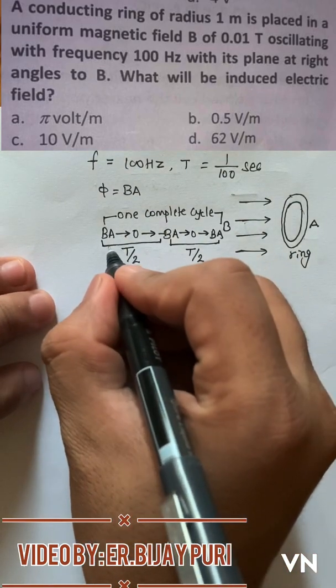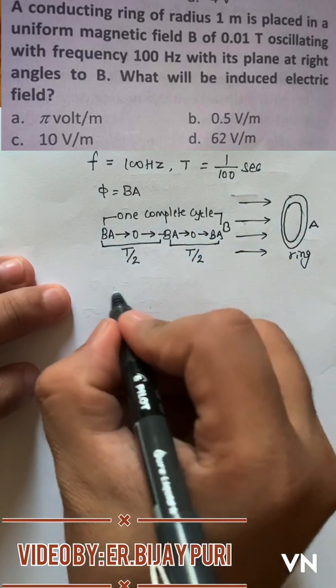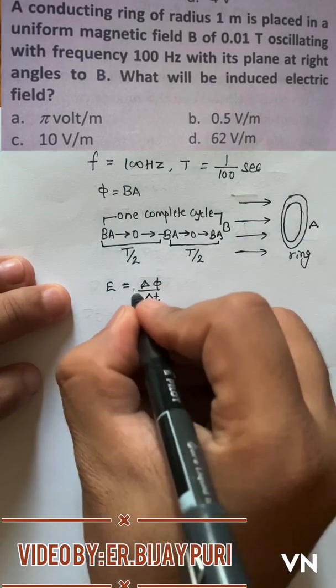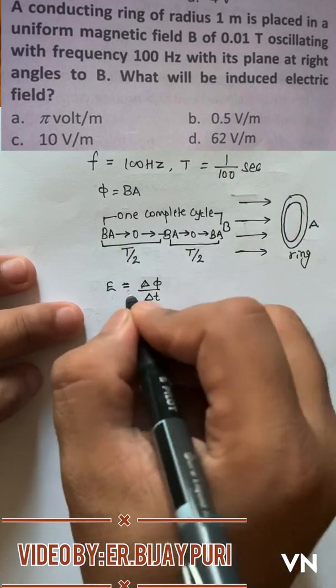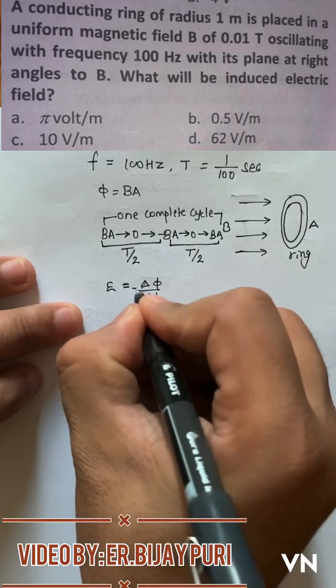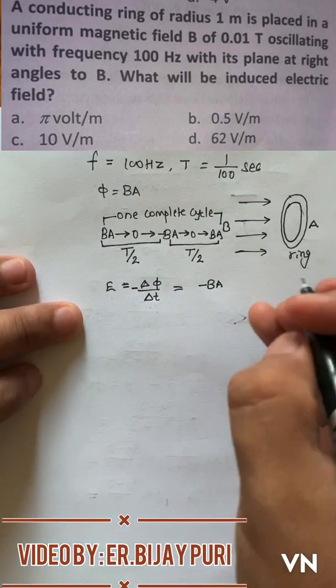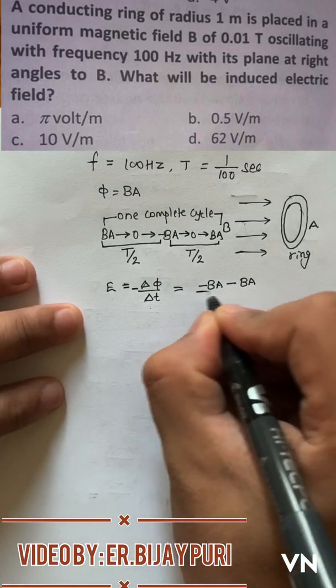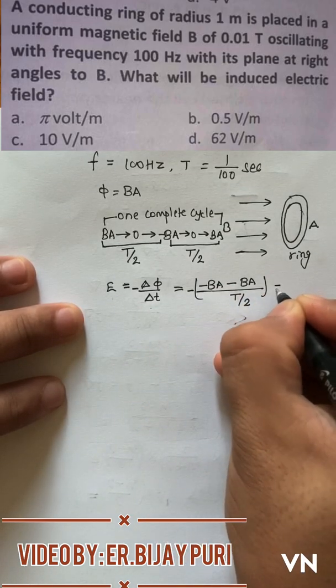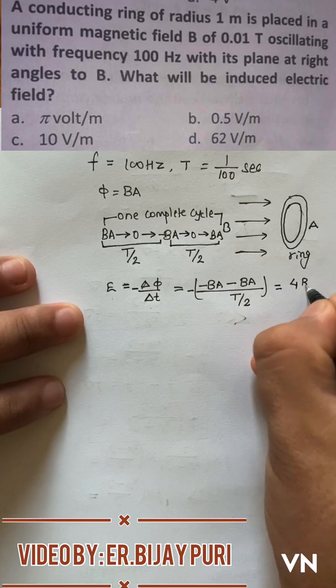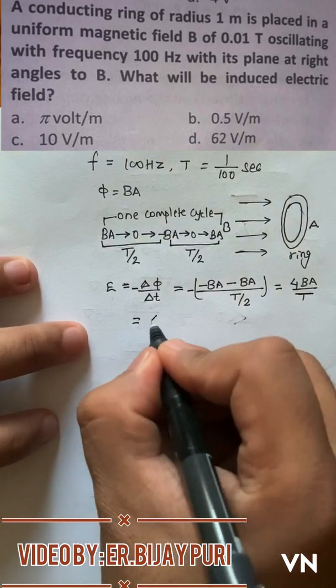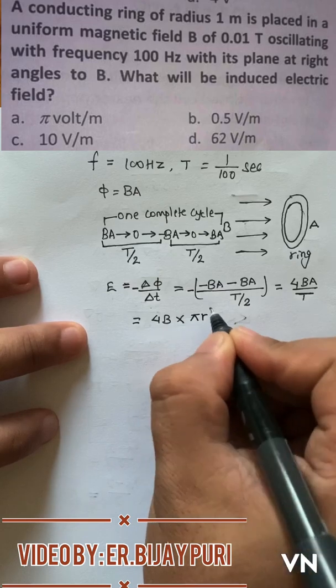This part constitutes t by 2 time period and this part constitutes t by 2 time period. From here we can calculate the emf induced in this ring. That means emf induced in this ring is equal to del phi by del t. If we want to calculate value only, we don't have to put minus, but if we want to use in the format of final minus initial, then we must put minus here. So it is minus BA minus minus BA by t by 2, and another minus at starting which leads us to 4 times BA by t, which is in fact 4 times B into area pi r square by time period t.